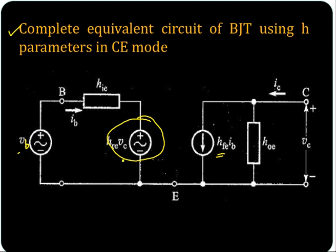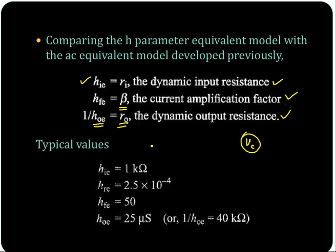So looking at the typical values, HIE is 1 kilo ohm — or 800 ohm as we said for the dynamic input resistance. So the value is close to 800 ohm, approximately 1 kilo ohm.